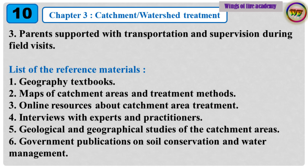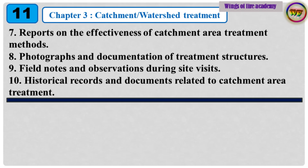List of reference materials: 1. Geography textbooks. 2. Maps of catchment areas and treatment methods. 3. Online resources about catchment area treatment. 4. Interviews with experts and practitioners. 5. Geological and geographical studies of the research area. 6. Government publications on soil conservation and water management. 7. Reports on the effectiveness of catchment area treatment methods. 8. Photographs and documentation of treatment structures. 9. Field notes and observations during site visits. 10. Historical records and documents related to catchment area treatment.